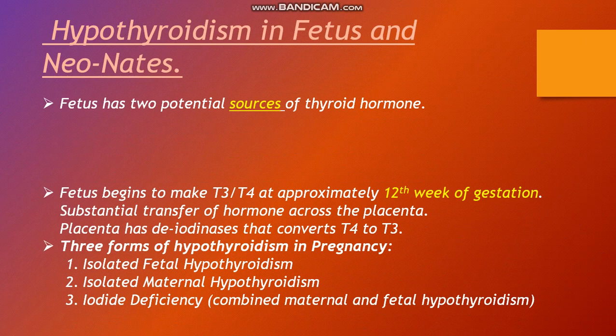There are three forms of hypothyroidism in pregnancy: isolated fetal hypothyroidism, isolated maternal hypothyroidism with iodide deficiency, and combined maternal and fetal hypothyroidism.